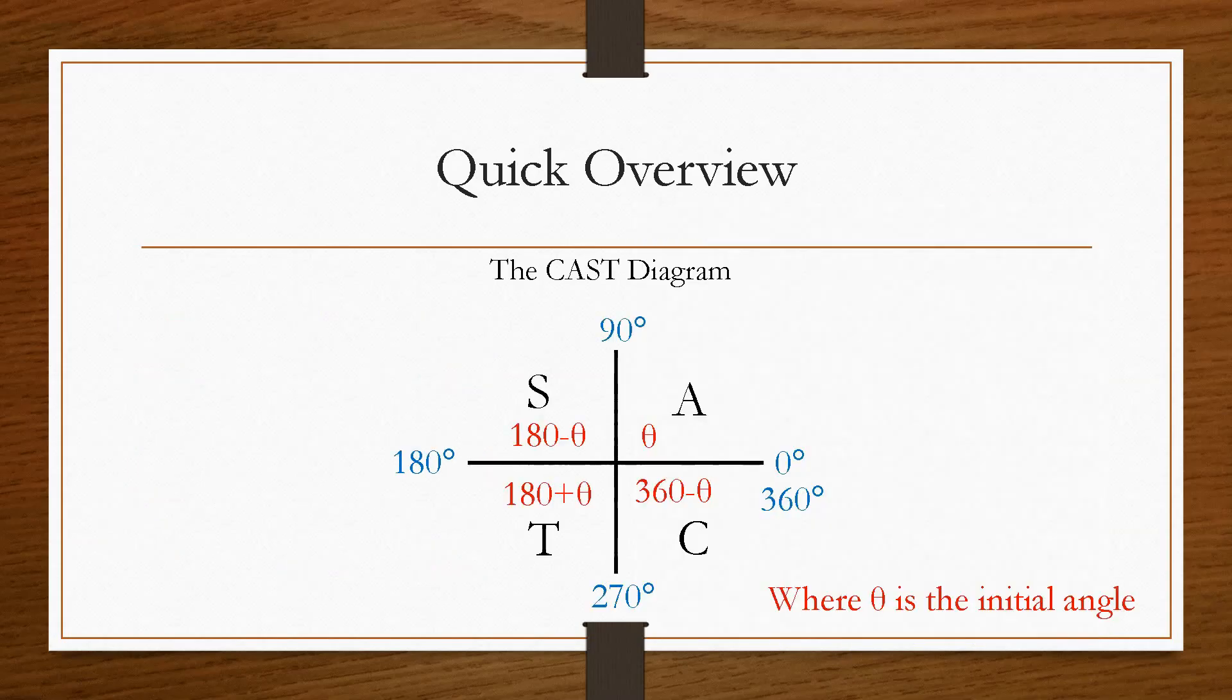So, in a quick summary, this is the CAST diagram that you will have to remember. You will get plenty of practice in using this, in writing this, and using these equations in here. And the key thing a lot of the time is people get these two mixed up. But just remember, in the S quadrant, it cannot be any more than 180 degrees. So it must be 180 minus.